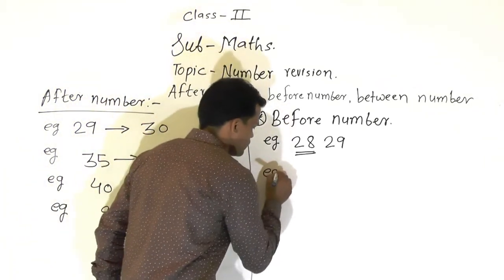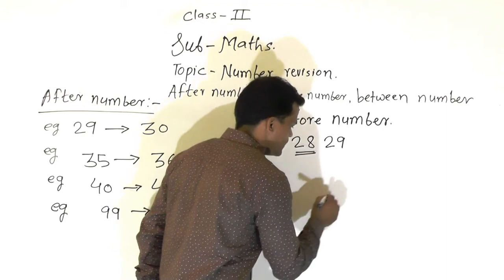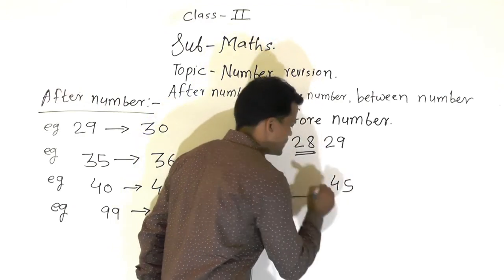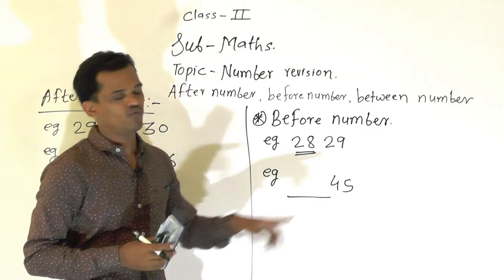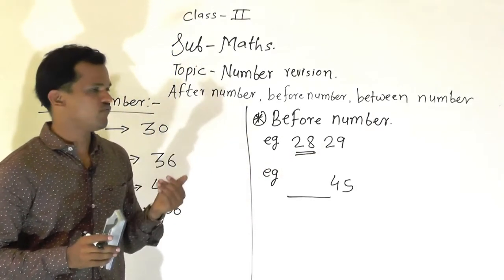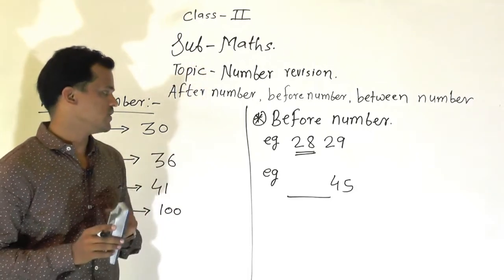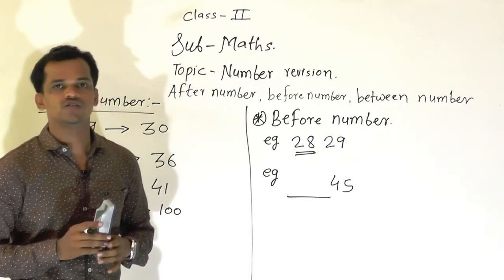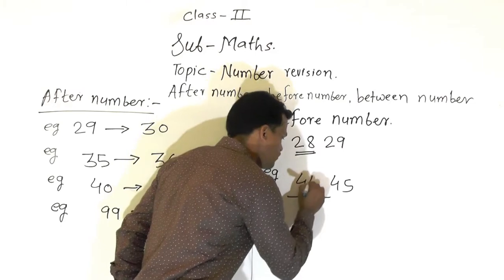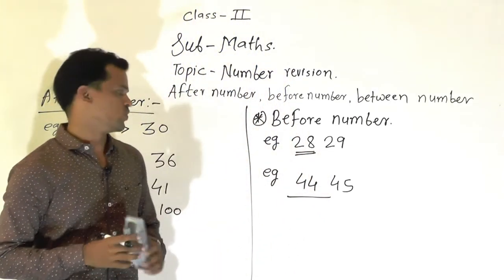One more example we will see here. The given number is 45, and the question is which is the before number of 45. So before 45, which number comes in the number series? That number is 44. So the before number of 45 is 44.